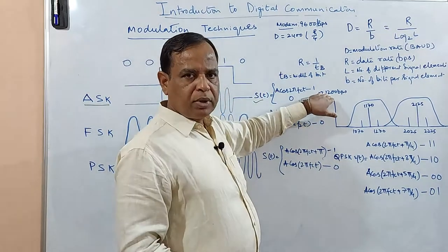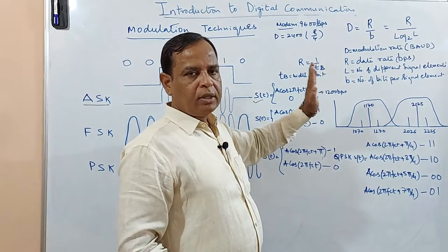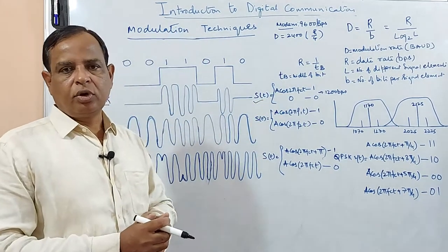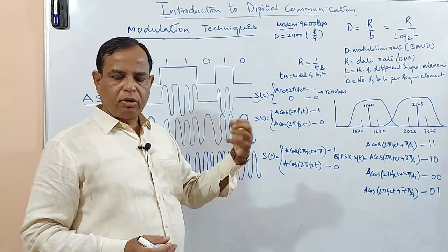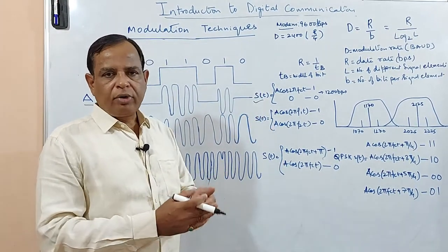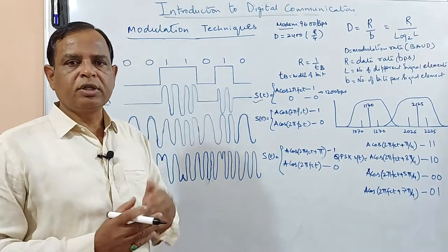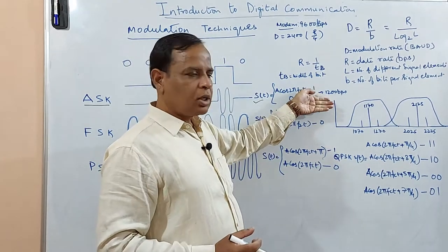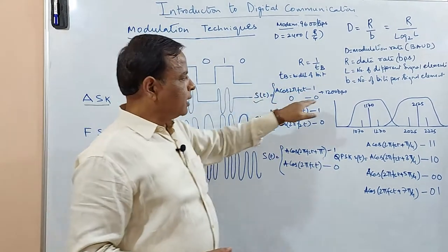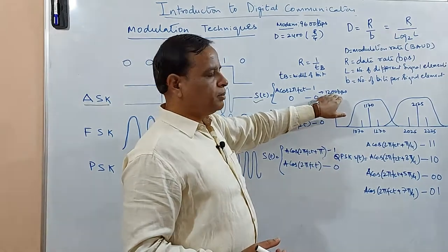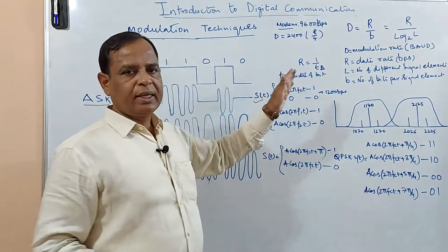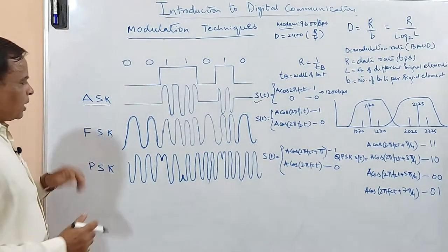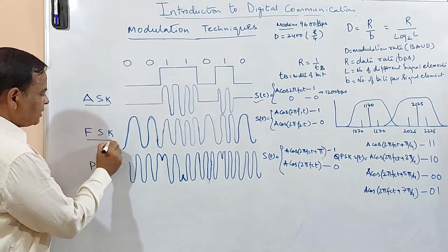This type of modulation technique can achieve a maximum of 1200 bits per second. Modems — modulator and demodulator — are found everywhere, even in our homes. The basic modems using the ASK technique used to provide speeds up to 1200 bps. ASK is not very popular. Now coming to the next scheme: Frequency Shift Keying (FSK).